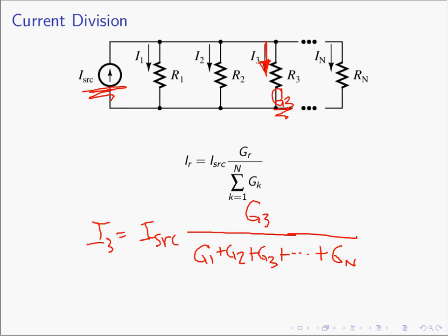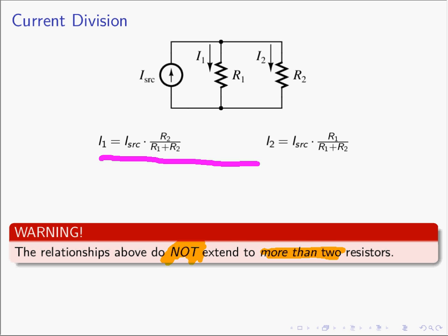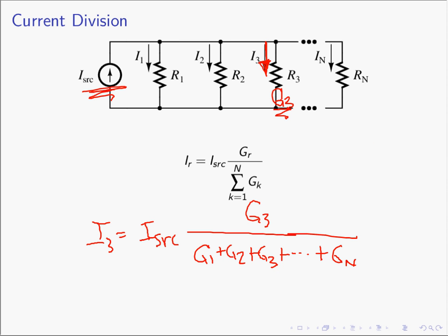Note: because we typically use resistance rather than conductance, the resistance form — with the other resistor in the numerator — does not extend beyond two resistors. When you multiply through for three, four, or more resistors, you get many cross terms. So the resistance view only works for two resistors. If you have more than two, convert to conductances and use the conductance form, which extends to an arbitrary number.